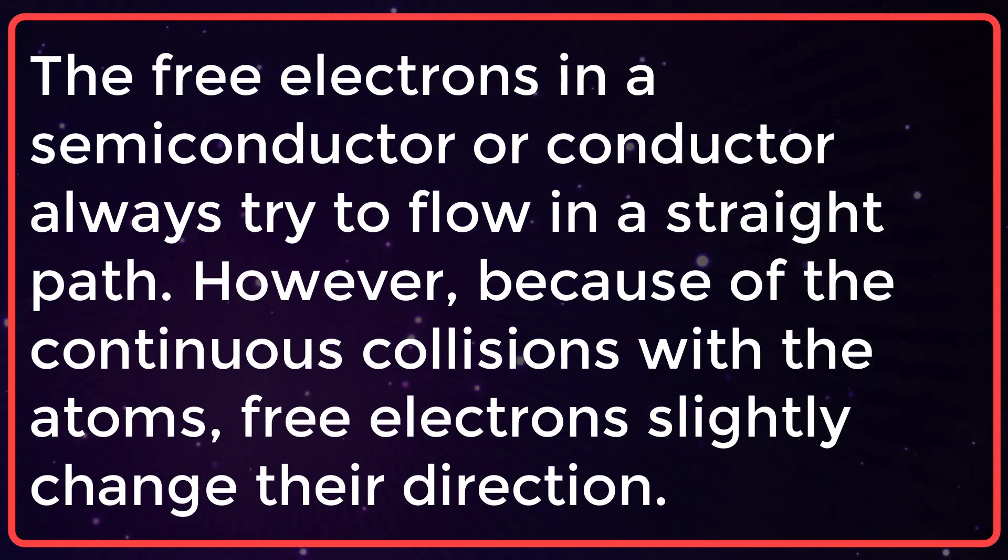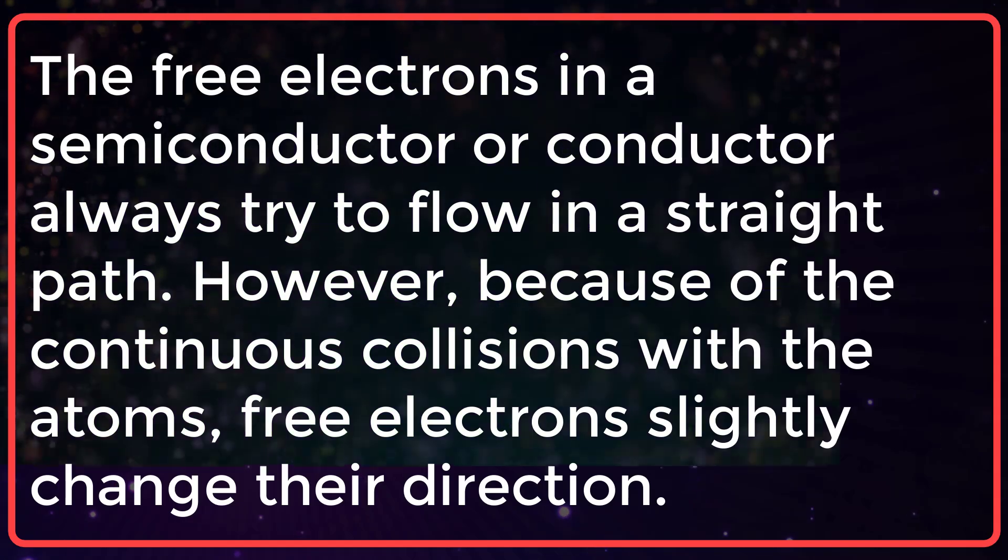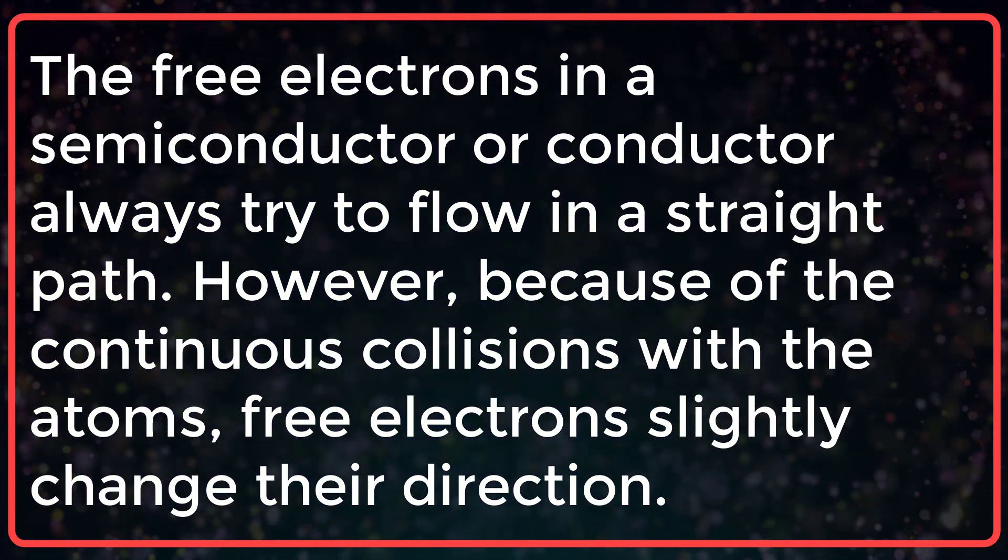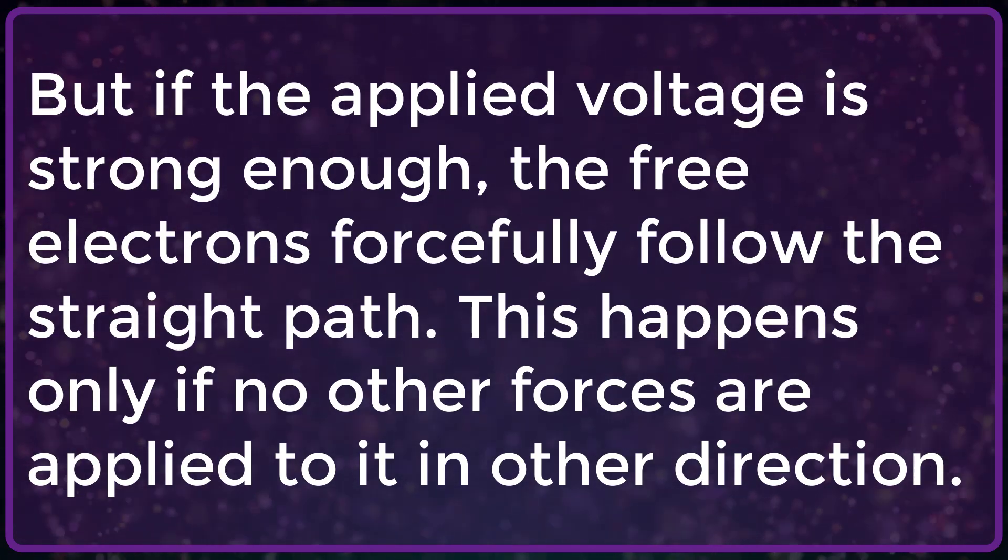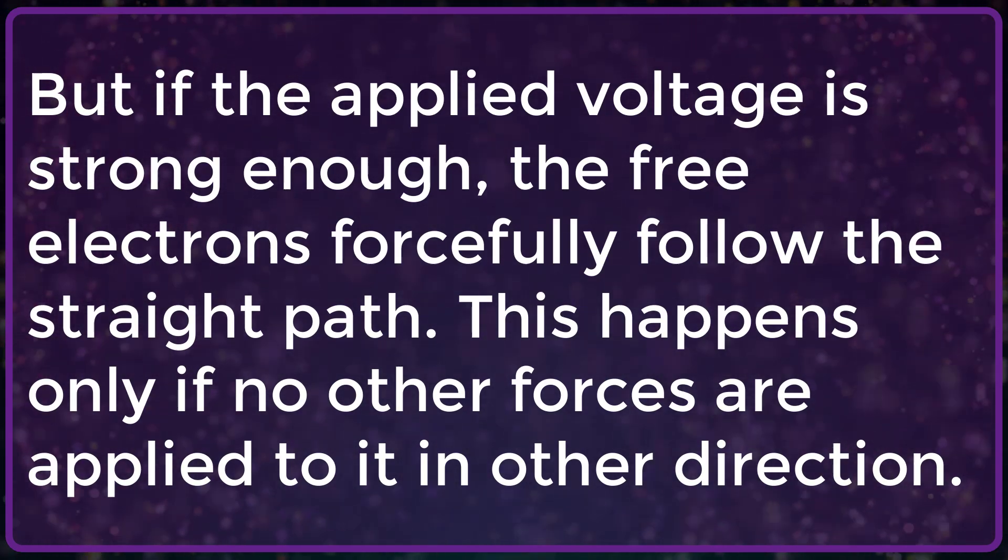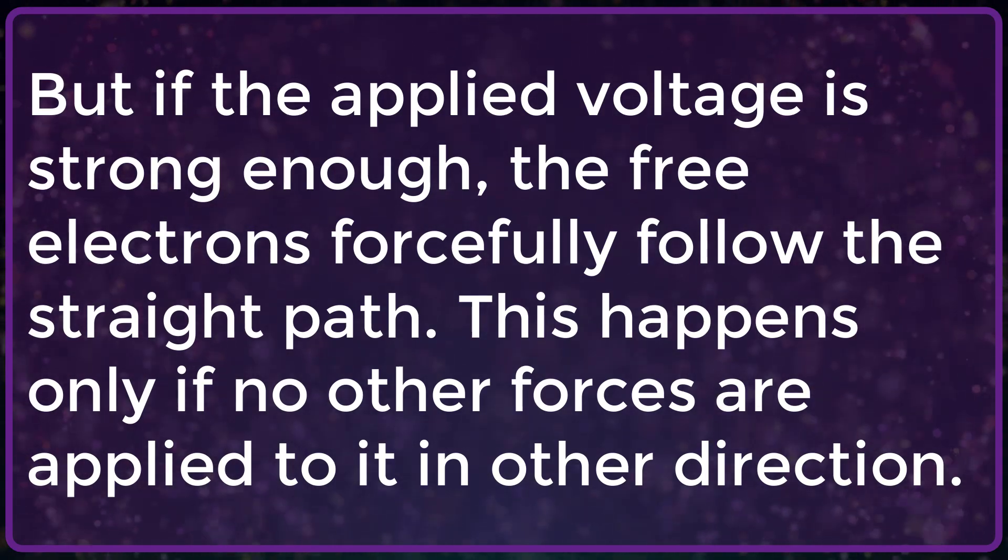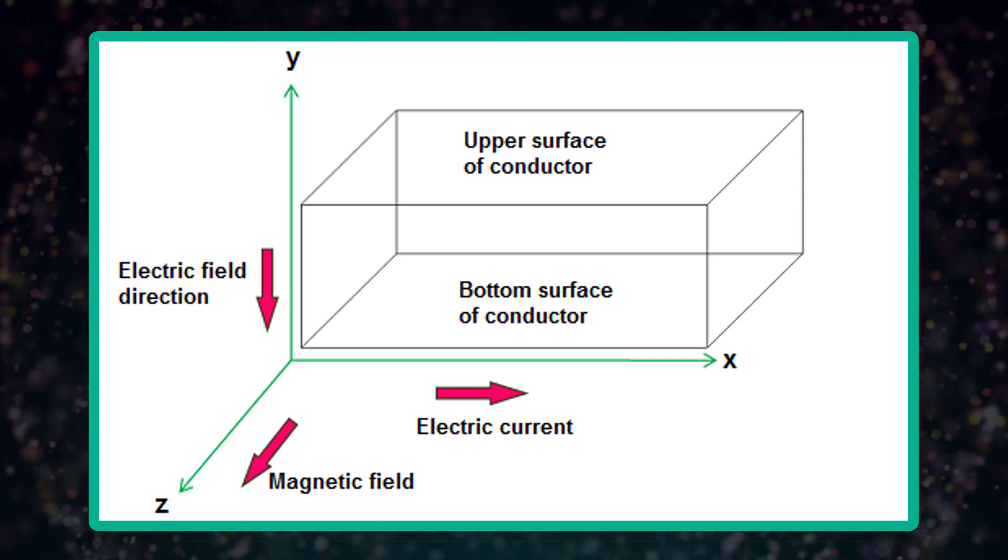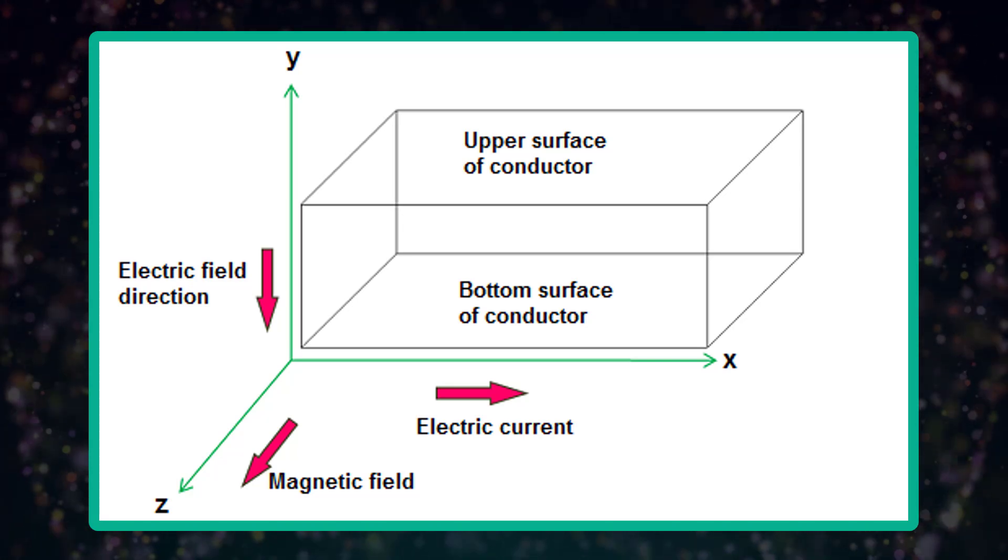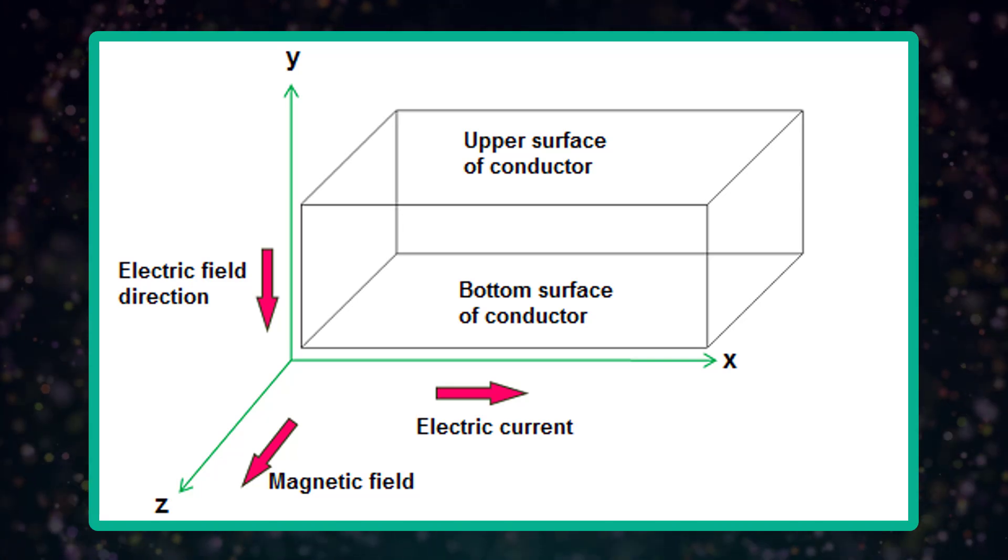The free electrons in a semiconductor or conductor always try to flow in a straight path. However, because of the continuous collision with the atoms, free electrons slightly change their direction. But if the applied voltage is strong enough, the free electrons forcefully follow the straight path. This happens only if no other forces are applied to it in other direction. If we apply the force in other direction by using the magnetic field, the free electrons in the conductor or semiconductor change their direction.